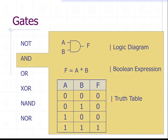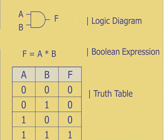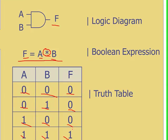The next gate is an AND gate, shown with two inputs A and B, and output F. The Boolean algebra expression is A AND B. Note this AND sign is not a multiplication sign — it means A and B equals F. In the truth table: zero and zero gives zero; zero and one gives zero; one and zero gives zero; only if both inputs are one do you get an output of one. So for an AND gate to be high, both inputs have to be one.